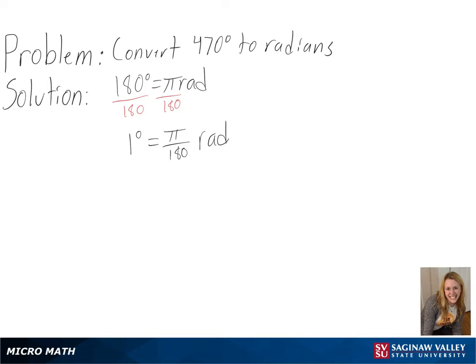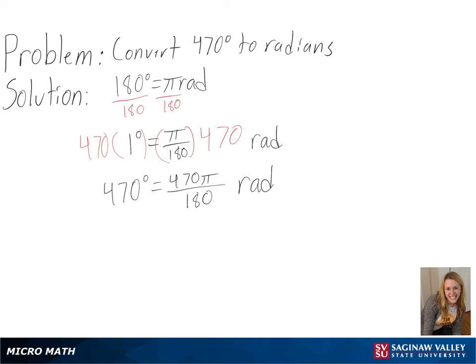And then we can multiply both sides by 470 to convert to 470 degrees. So after simplifying, we will get 47 pi over 18 radians as our final answer.